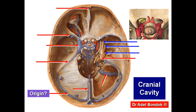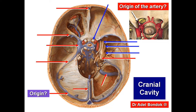Remember: oculomotor, trochlear, ophthalmic, and maxillary nerves run in the lateral wall of the cavernous sinus. This is the optic nerve, formed by the axons of the ganglion cells of the retina. The ophthalmic artery is a branch of the internal carotid artery. This fold is the tentorium cerebelli.